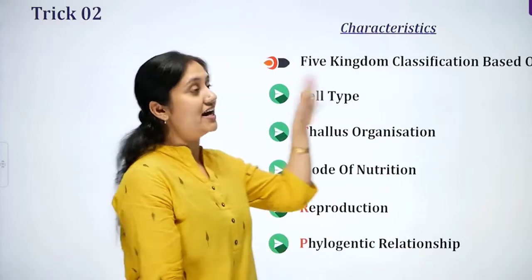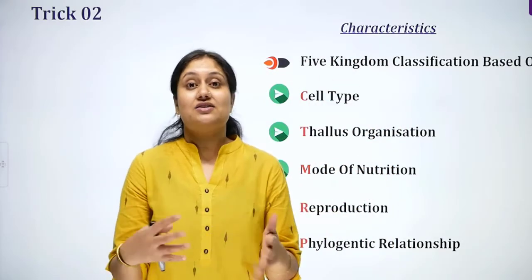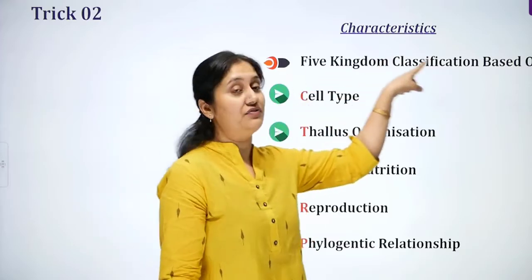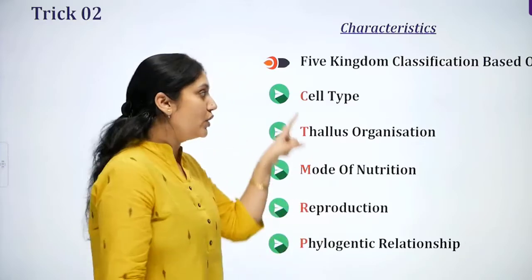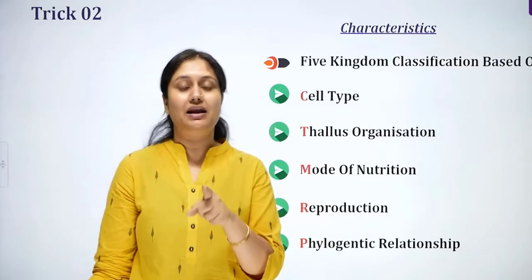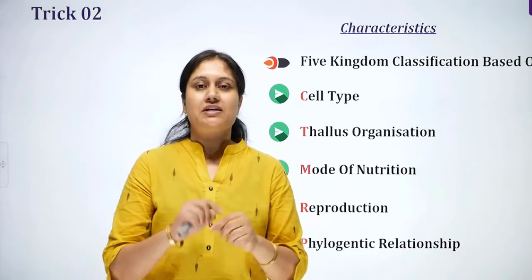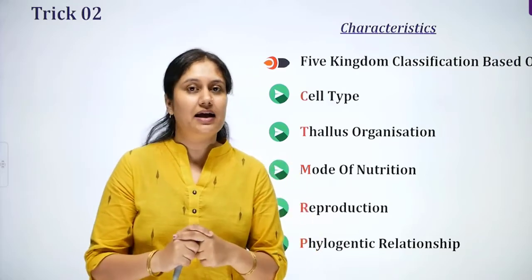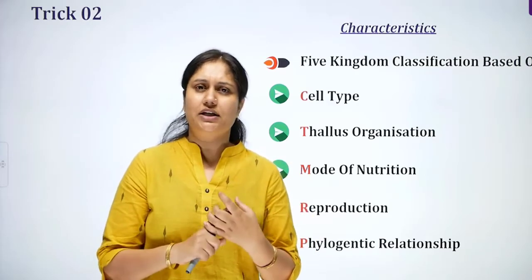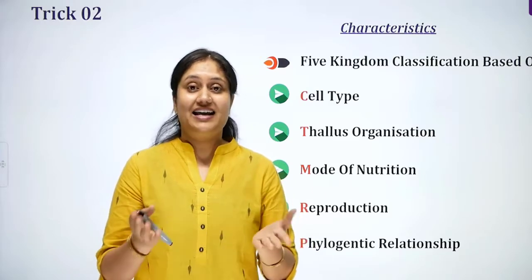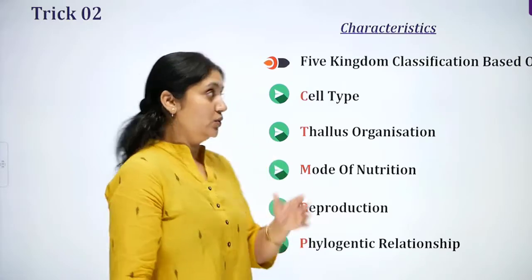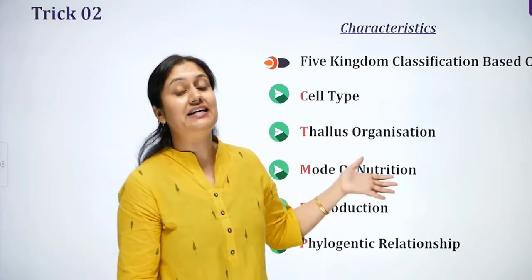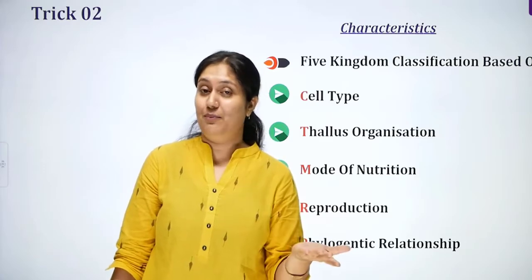After this, we take another trick. The five-kingdom classification, based on R.H. Whittaker, is based on five criteria. We can also remember these criteria with a trick.